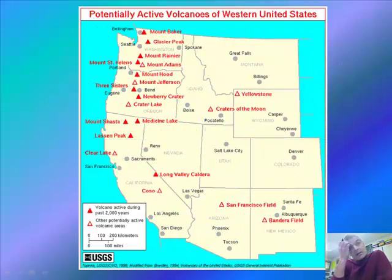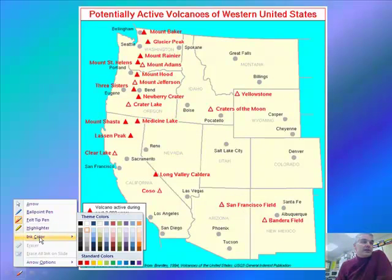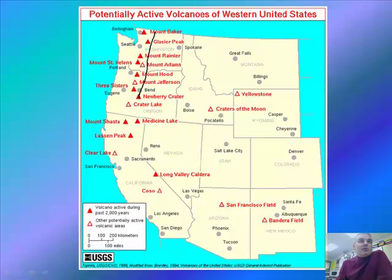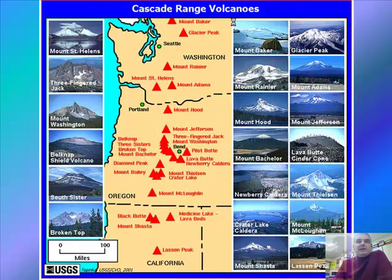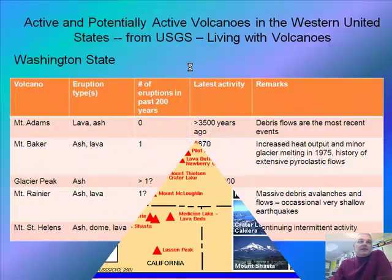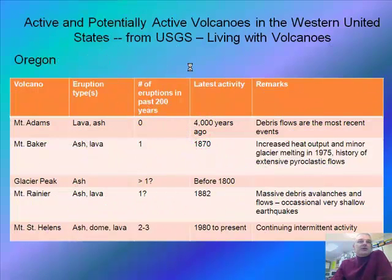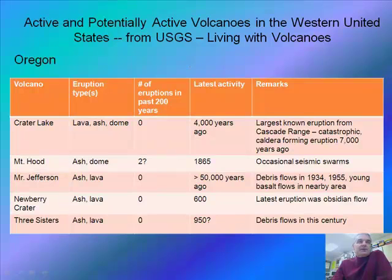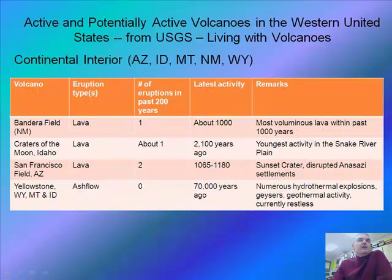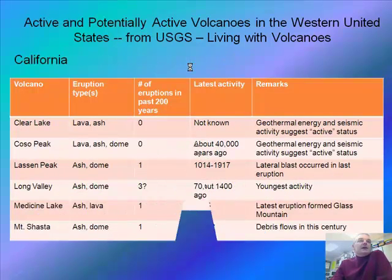Here are some of those volcanoes that we see in America, and you can see the pattern. This is the western part of the United States — they kind of form a line, and that's part of this whole Ring of Fire. Here are actual pictures of them, and here's the classic one: Mount St. Helens, because it's the one that last erupted dramatically.